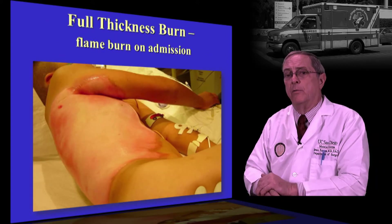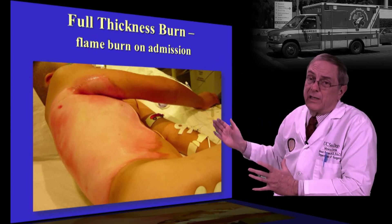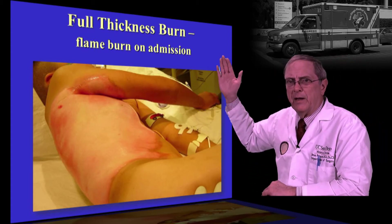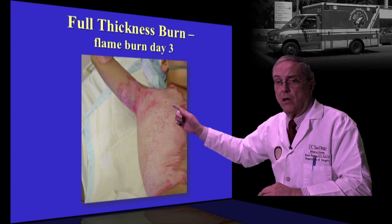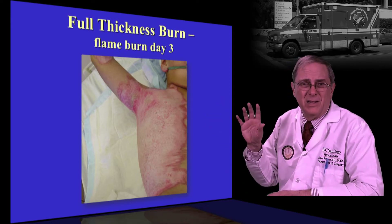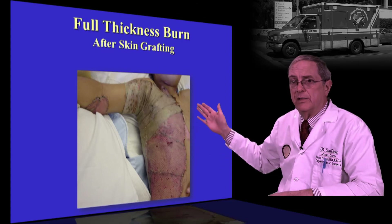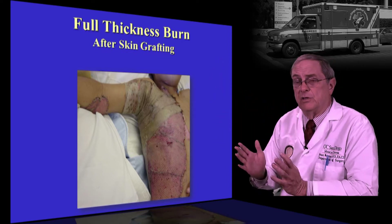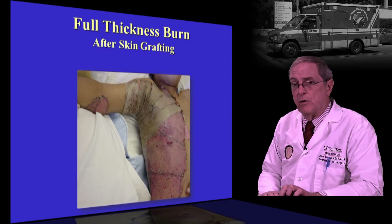A child whose shirt caught fire while raking leaves initially appeared to have a deep partial thickness burn with erythema around the periphery. However, one day later that erythema was completely gone, replaced by white skin — confirming a full thickness injury. The child was subsequently skin grafted using a 1:1.5 mesh with cadaver skin placed on top to protect the mesh in a high-friction area. The child was placed in an airplane splint, and the graft did well.